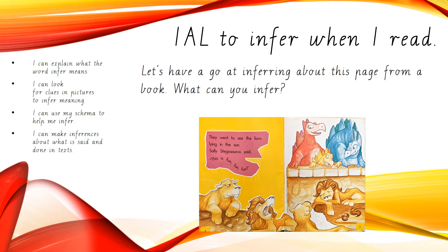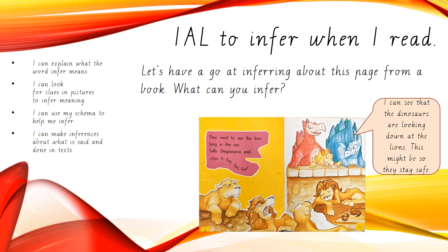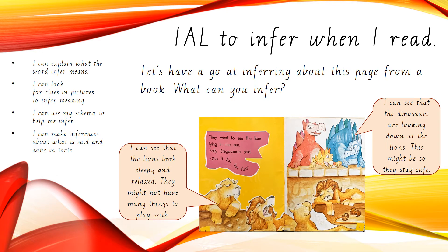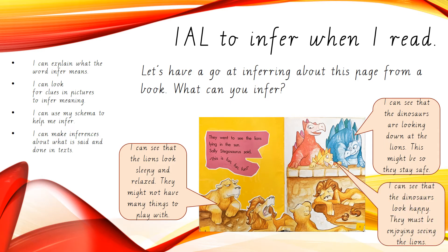Let's have a go at inferring about this page from a book. What can you infer? I can see that the dinosaurs are looking down at the lions — this might be so they stay safe. I can see that the lions look sleepy and relaxed; they might not have many things to play with. I can see that the dinosaurs look happy; they must be enjoying seeing the lions.